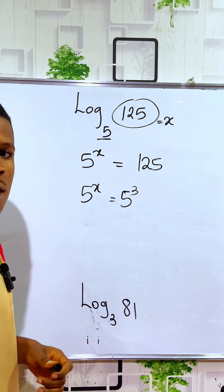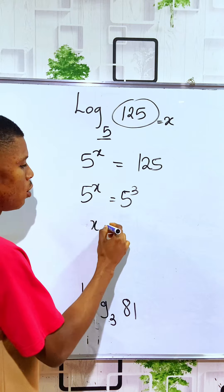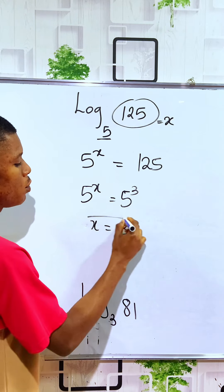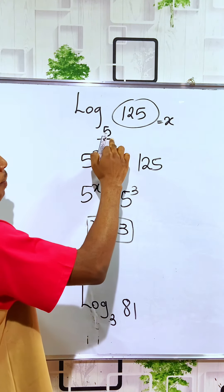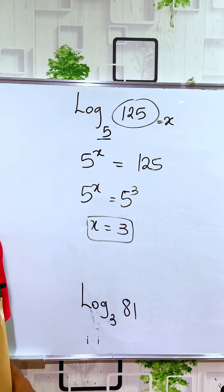Observe that the bases are equal. That means the powers are also equal. So you are going to raise 5 to the power of 3 to get 125.